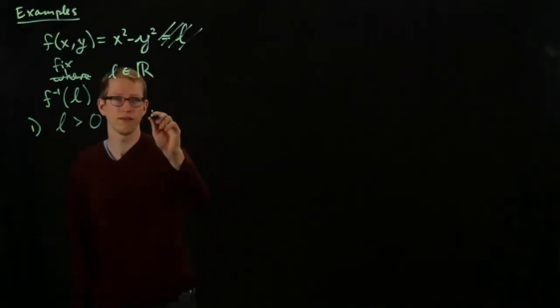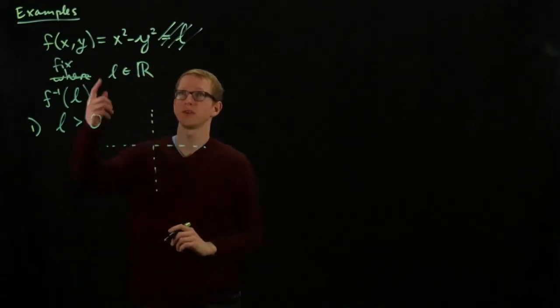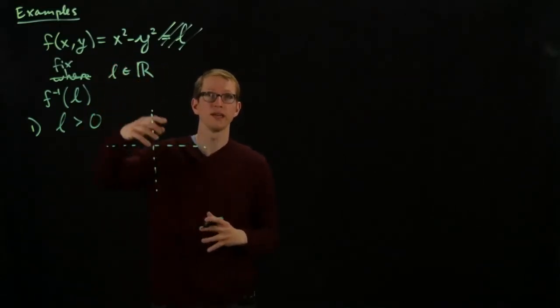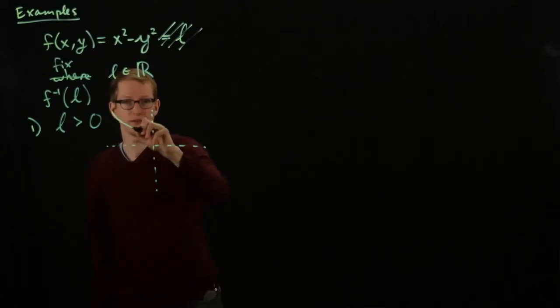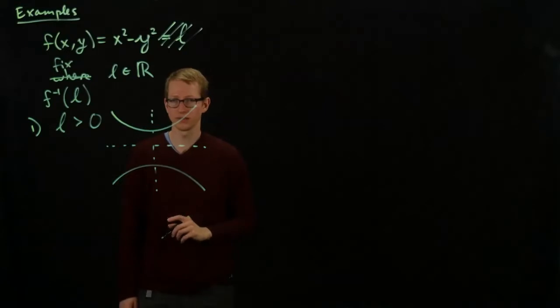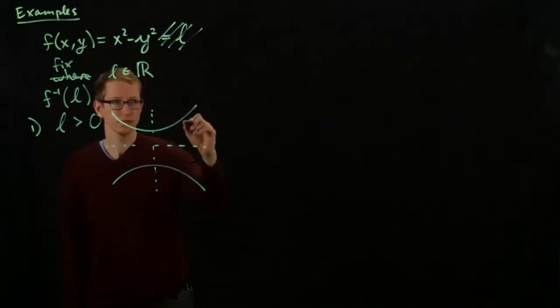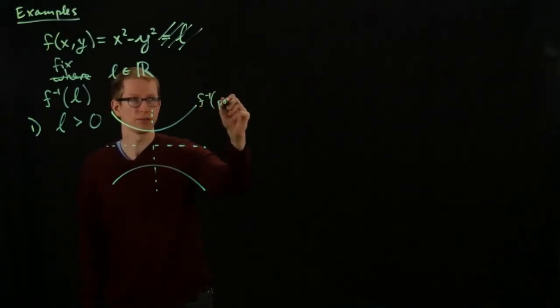In this case, if L is greater than 0, then we have x squared minus y squared is a positive quantity. And you can check that this gives us hyperbola, so this is what F inverse of a positive number gives us.